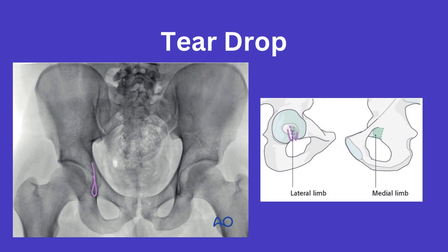Next, the teardrop can be appreciated here. The lateral aspect of the teardrop is formed by the acetabular fossa, while the medial aspect is formed by the obturator canal.